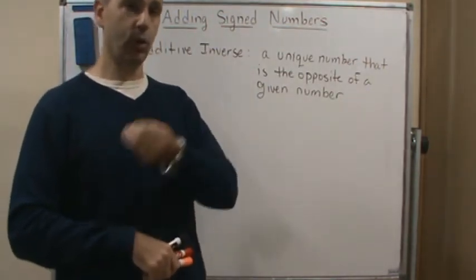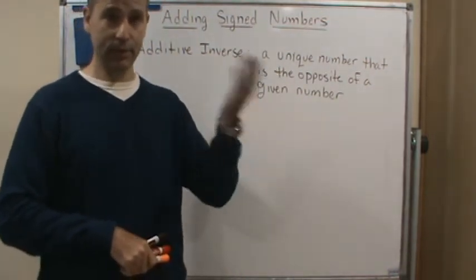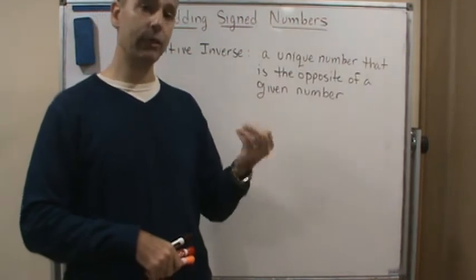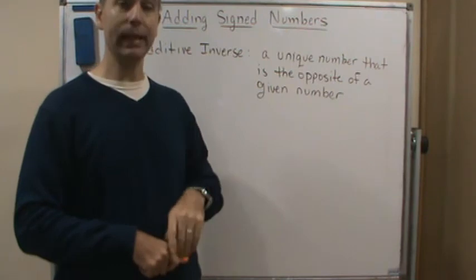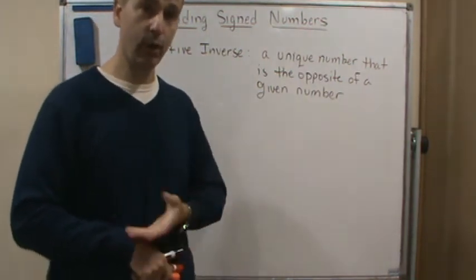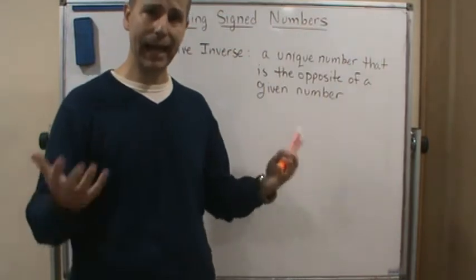So if you give me negative two, the opposite is two. If you give me negative five, the opposite is five. So it's true that every single number, every single integer has an opposite, which means every single number other than zero has what's called an additive inverse. Well, what does it mean to be an additive inverse?